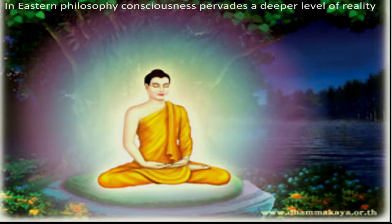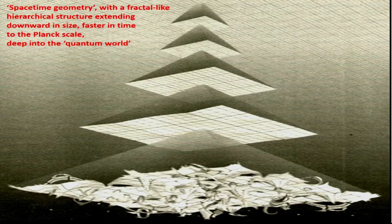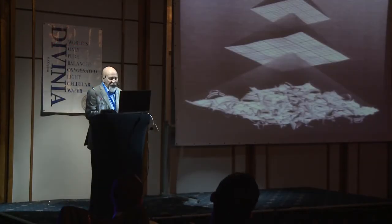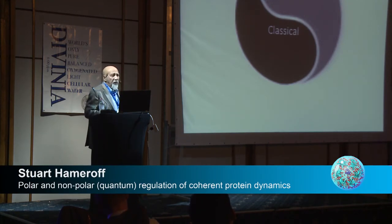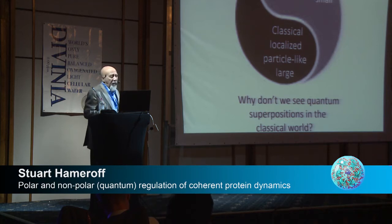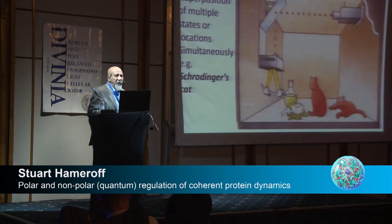On the other hand, Eastern philosophy suggests that consciousness pervades a deeper level of reality — conscious awareness is everywhere. But then what is reality? Many believe it's hierarchical, with a fractal-like structure called space-time geometry extending downward in size and faster in time to the Planck scale, deep into the quantum world. Our world is divided into two realms: the quantum and the classical. In the classical, particles are localized and act like objects; at small scales there's quantum superposition, where things can be in multiple places at the same time.